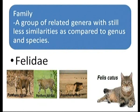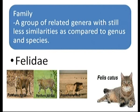Family is a group of related genera with decreasing similarities compared to genus and species. For example, lion, tiger, and leopard belong to genus Panthera, while cat belongs to genus Felis (Felis cattus). Although cat resembles a miniature tiger, they have different genera. However, both genera are placed in the common family Felidae. Order is a group of related families with very few similarities. The family Felidae (cats) and the family Canidae (dogs) are both placed in the order Carnivora, because the organisms in both families mostly eat flesh.